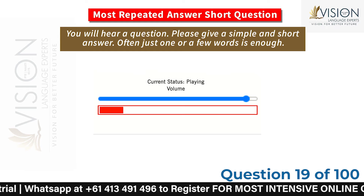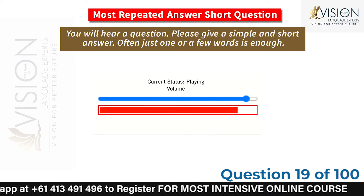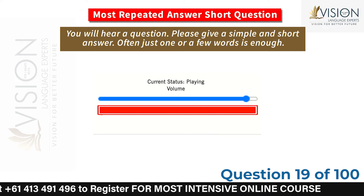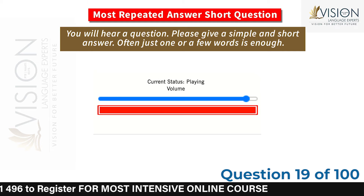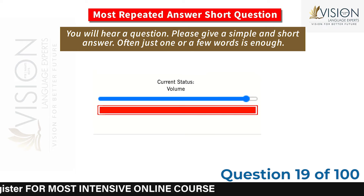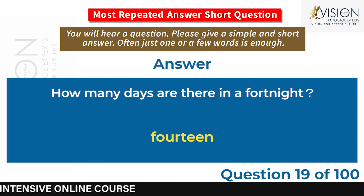How many days are there in a fortnight? 14.